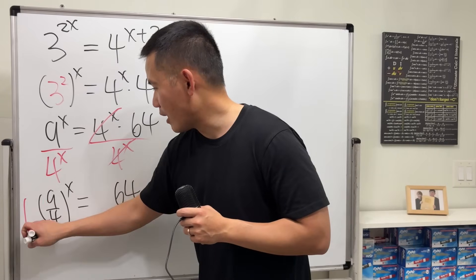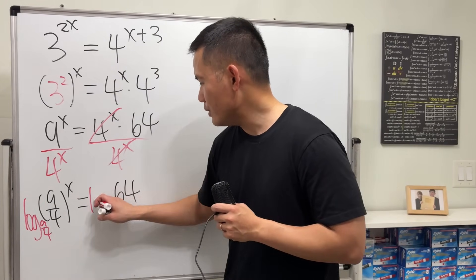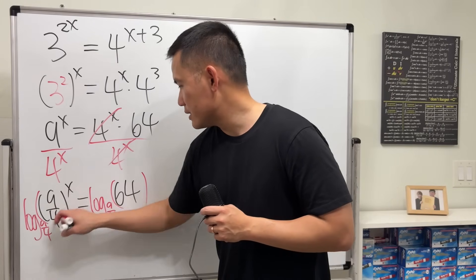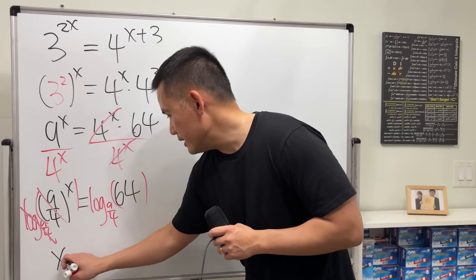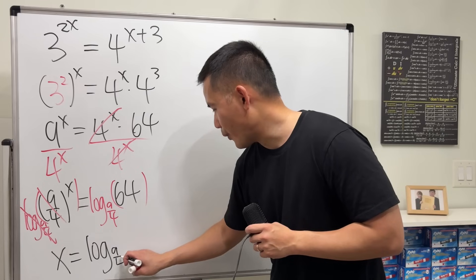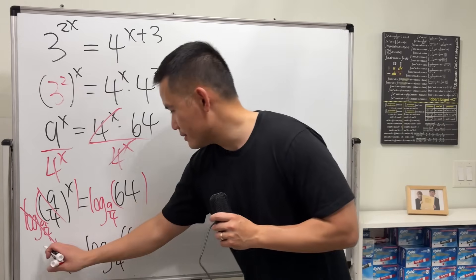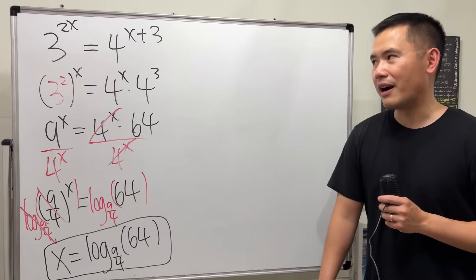Now we can just take log with this base, which is 9/4, and do that to the other side as well. So as you can see, this and that will cancel, and then we'll just get x = log base 9/4 of 64. And that's pretty much it. Not bad. It's a very standard precalculus equation that you have to know how to solve.